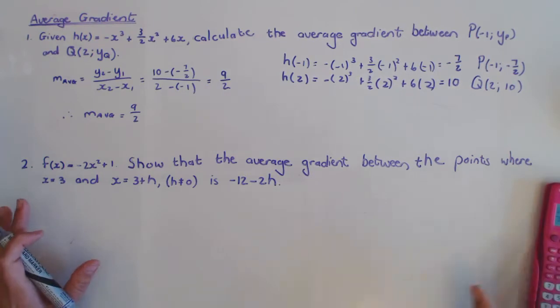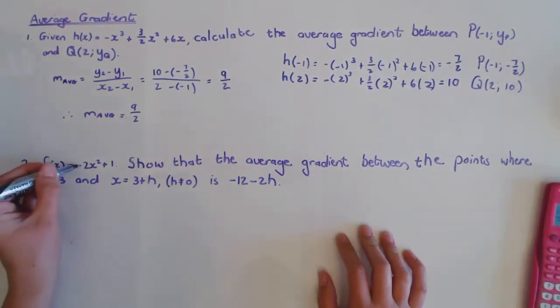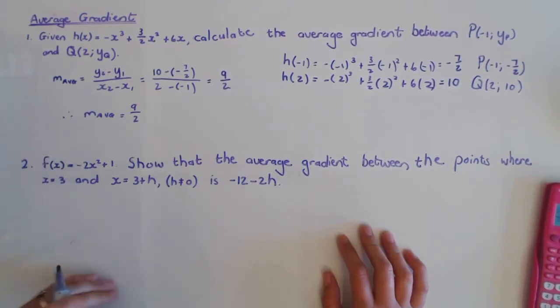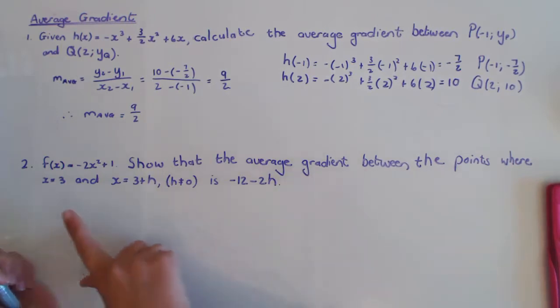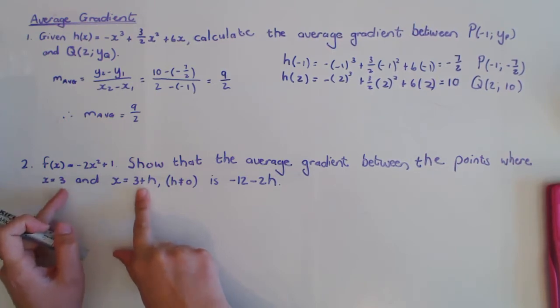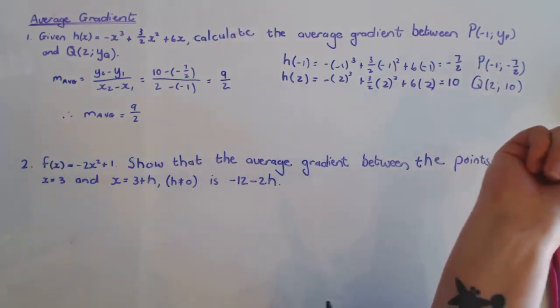Now in this question, this is a little bit more tricky. They give me a function -2x² + 1, and they say show that the average gradient between the two points where x is 3 and x is 3 + h, where h is not 0 because that means I have both x is 3, I'm going to show that the average gradient is this.